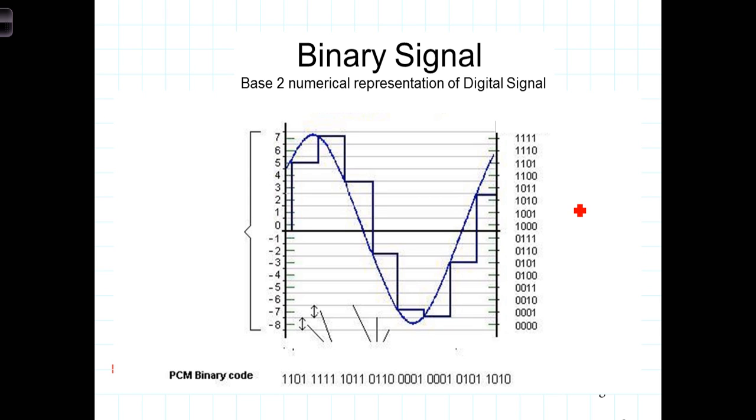In our example here, each sample is represented by a four-bit binary code. With four bits you can represent 2 to the 4th, or 16 different values. In this case, all the values of this analog signal that varies from about minus seven volts to plus seven volts will be assigned one of the 16 different binary numbers.